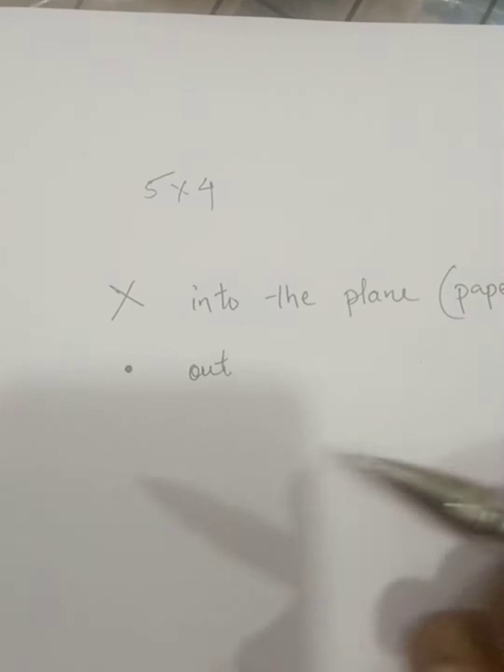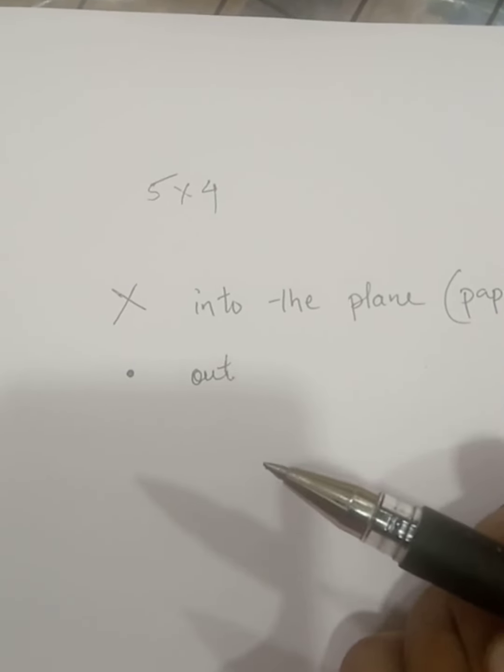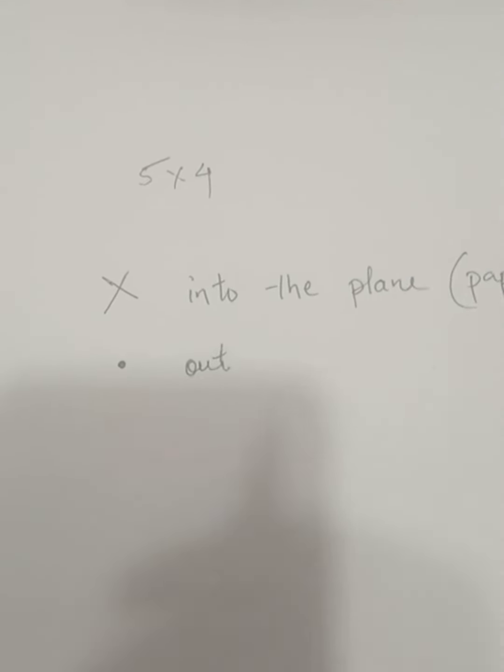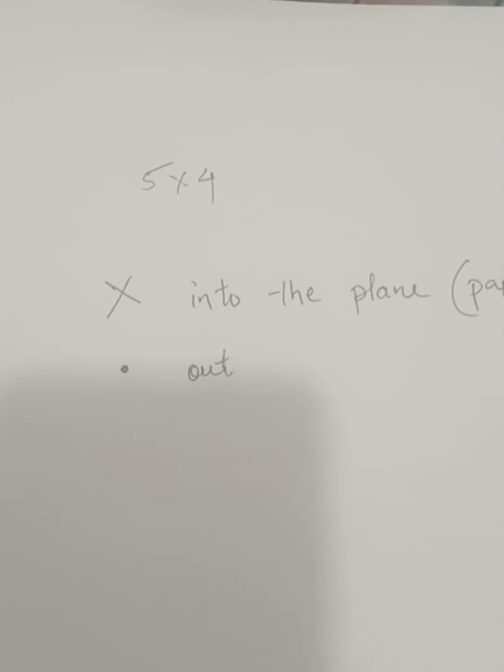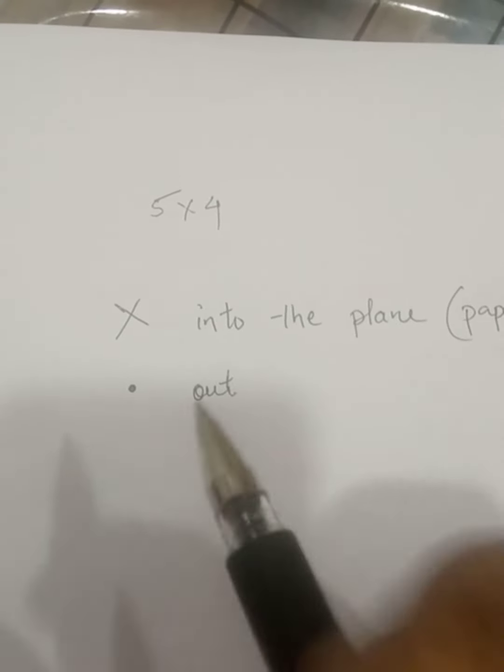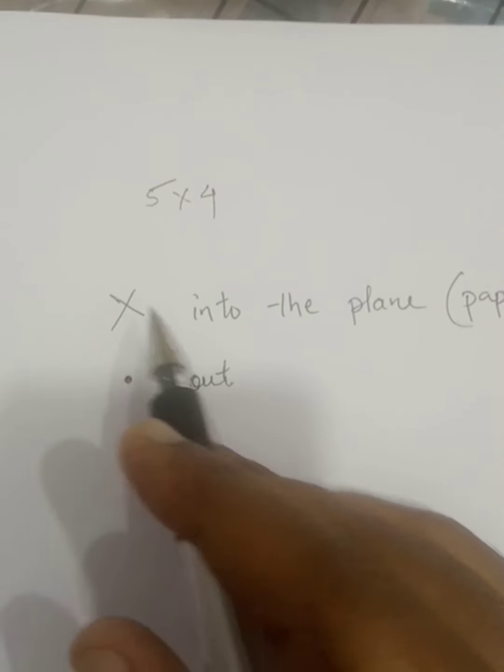This is the out word. This is the dot. This is the cross. This is the into — this is into the plane.